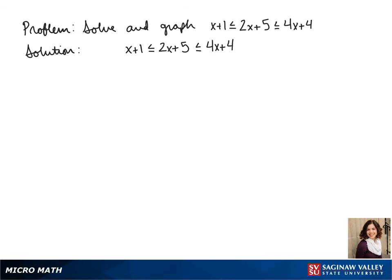We start by breaking this into two different parts. x plus 1 is less than or equal to 2x plus 5 and 2x plus 5 is less than or equal to 4x plus 4.